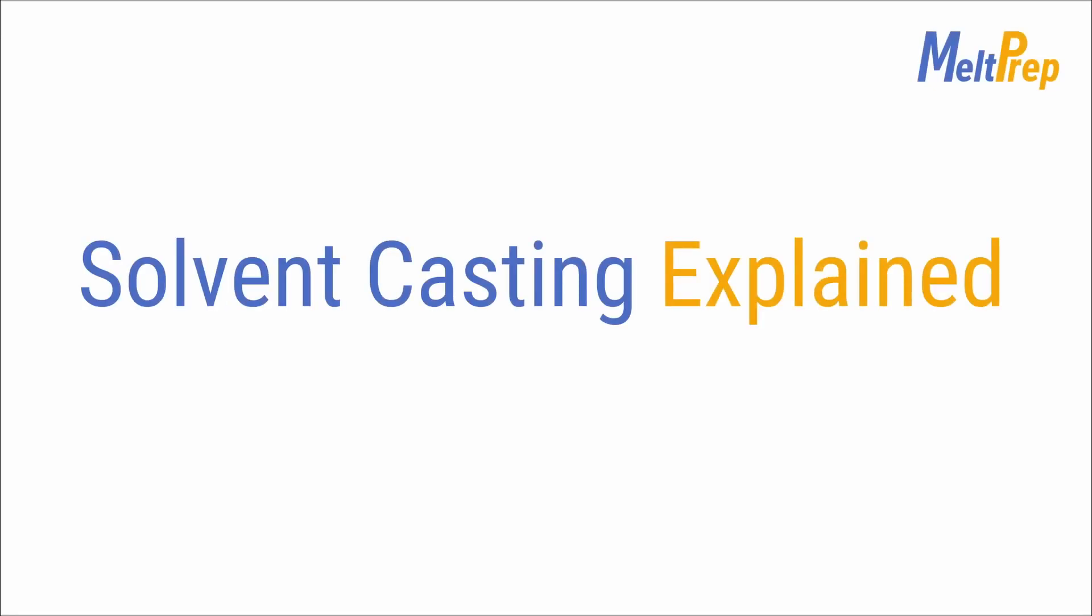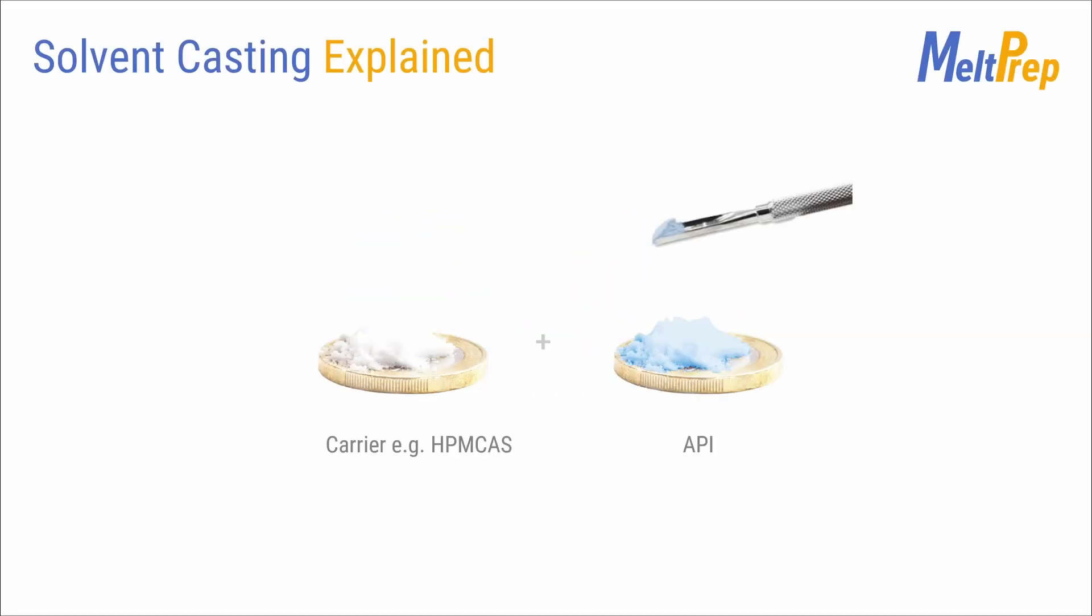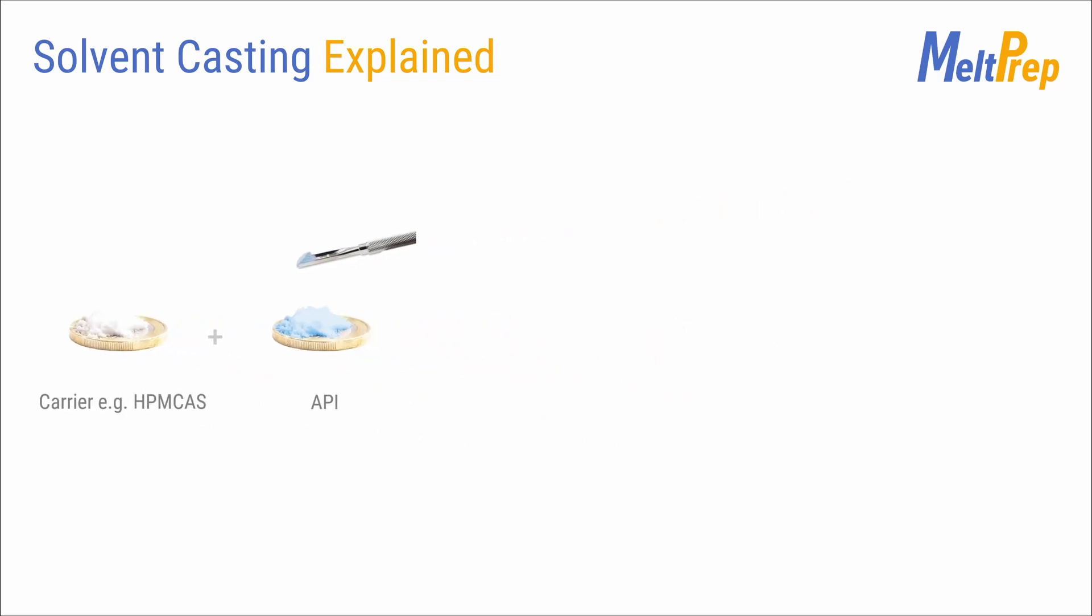Solvent Casting Explained. Solvent casting can be used to replace the mechanical mixing of an extruder screw and obtain homogeneous mixtures on a molecular level.